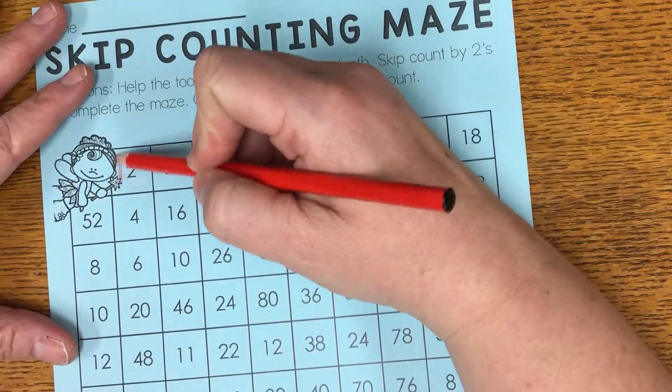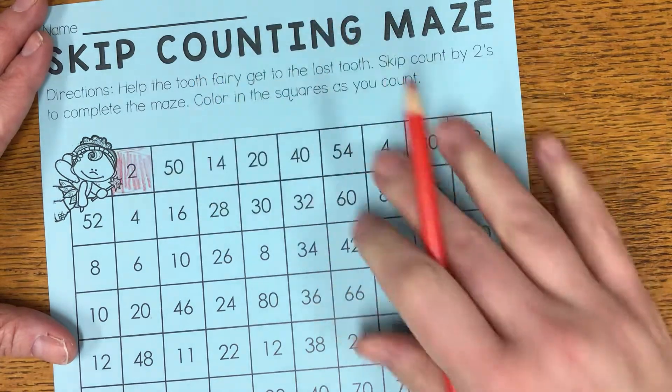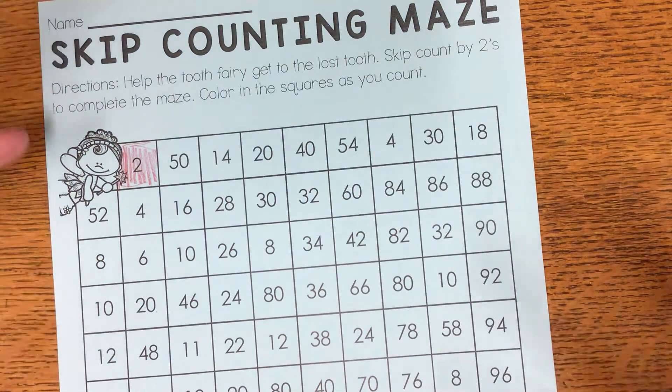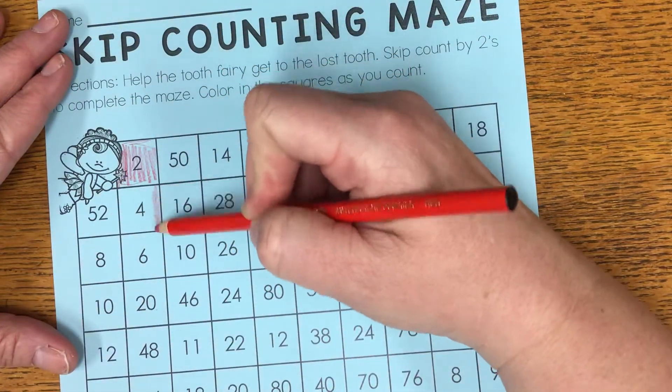So I'm going to start with two and I know that it goes two, four, six, eight. So the first thing I'm going to look for is two, four, six, eight. And I see that I have four right here.